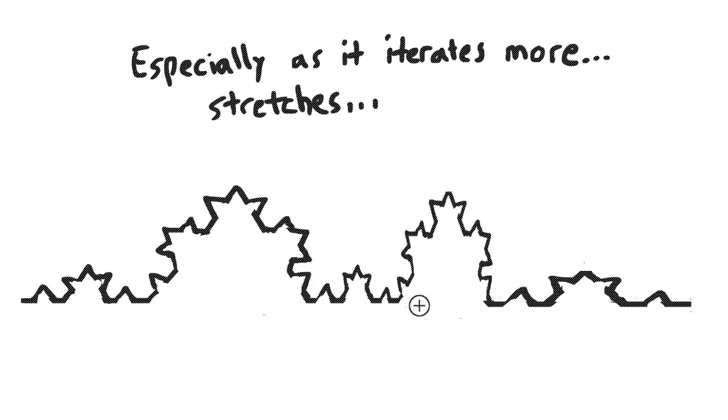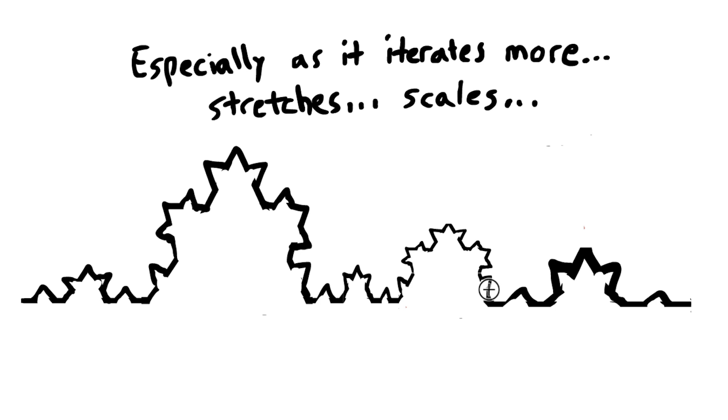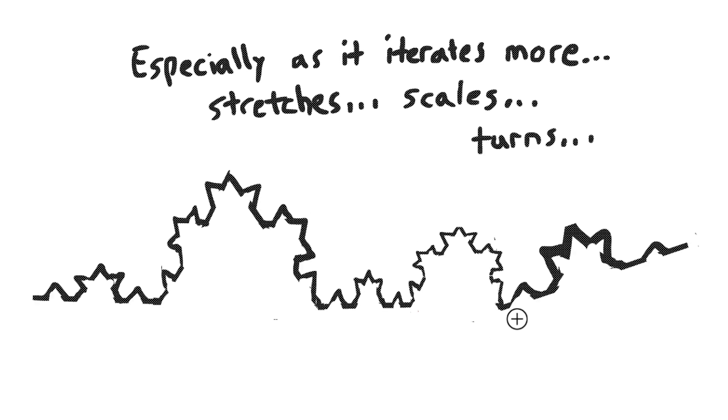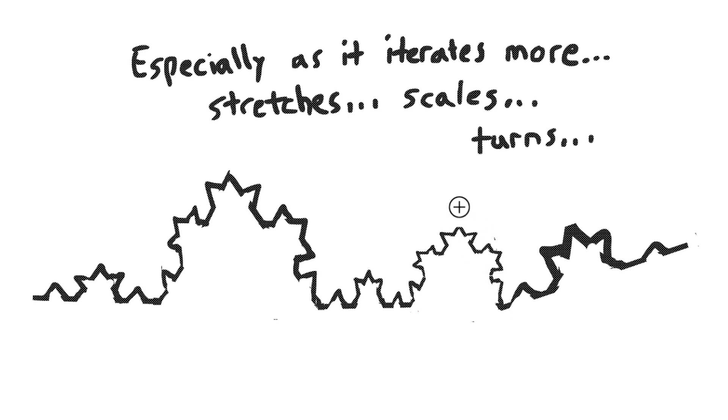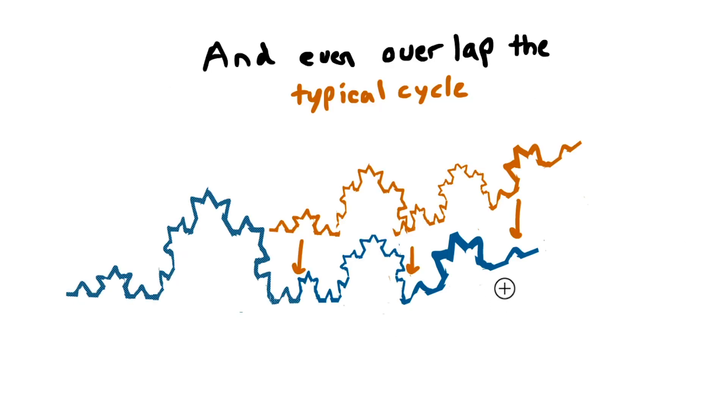It makes it even more difficult because as these stretch and scale and turn, it becomes even harder to recognize that this is the same as this, but it's sideways. And this is the same as this, even though the scale is completely different. Again, it has to do with the fact that you are squashing and stretching these things and scaling them proportionate to the parts around it and to the speed at which it's going. You can even overlap what you would consider the typical cycle.